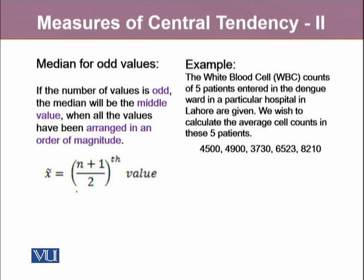Let's take an example to calculate median. The white blood cell counts of 5 patients entered into the dengue ward in a particular hospital in Lahore are given. This is the same example we discussed in the previous module where we talked about mean. To calculate median from these values, in step 1, we will order this data into ascending order. The values will be 3730, then 4500, 4900, and the last value is 8210. In step 2, we will assign an index to these values.